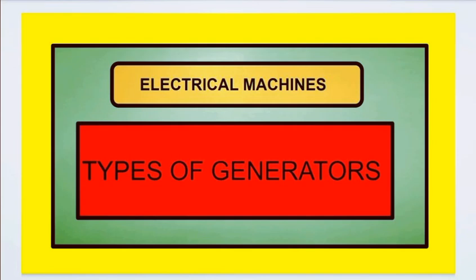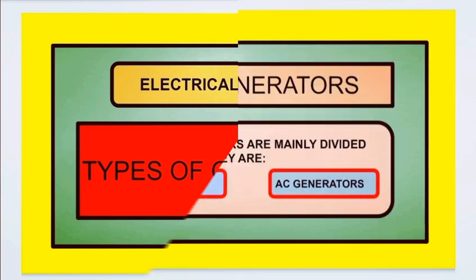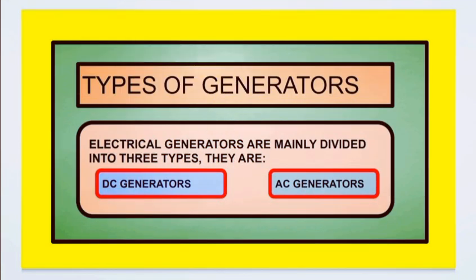Hi students, in this video I am going to explain about types of generators in electrical machines. We will see different types of generators in electrical machines. Electrical generators are mainly divided into two types: DC generators and AC generators.